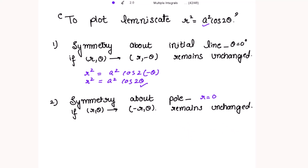For symmetry about the pole, if I replace (r, θ) with (−r, θ), the result should be the same. Replacing r with −r gives (−r)² = a² cos(2θ), which simplifies back to r² = a² cos(2θ). The result is the same, so we have symmetry about the pole.